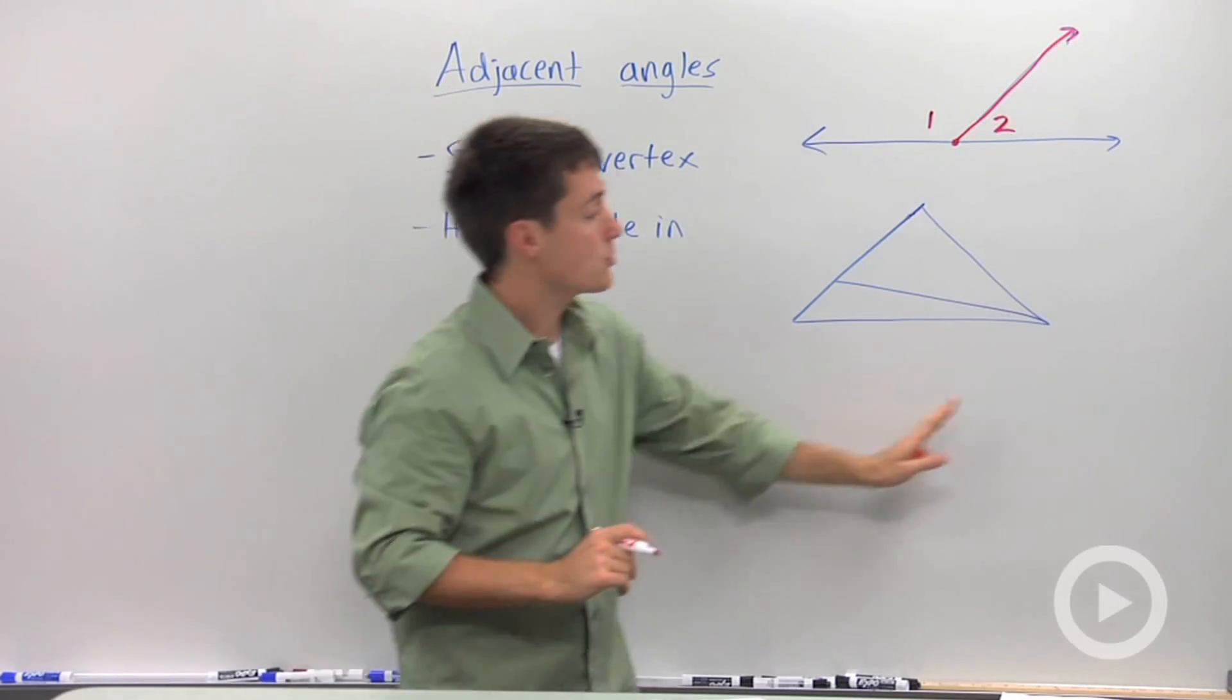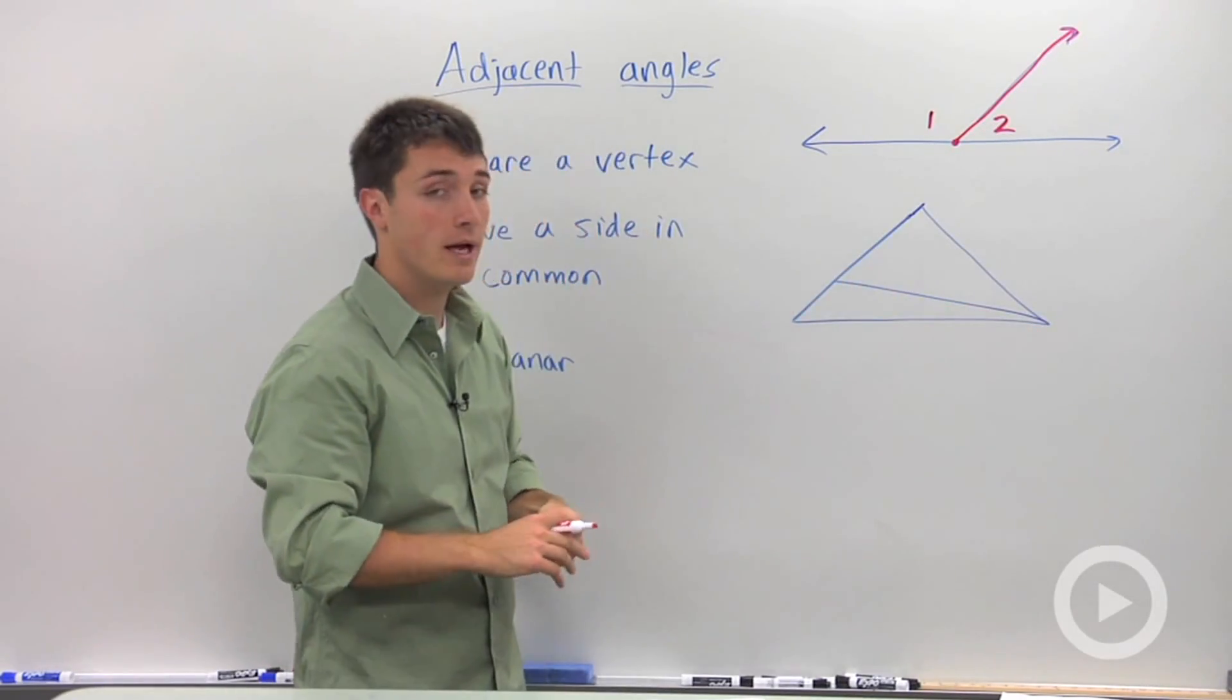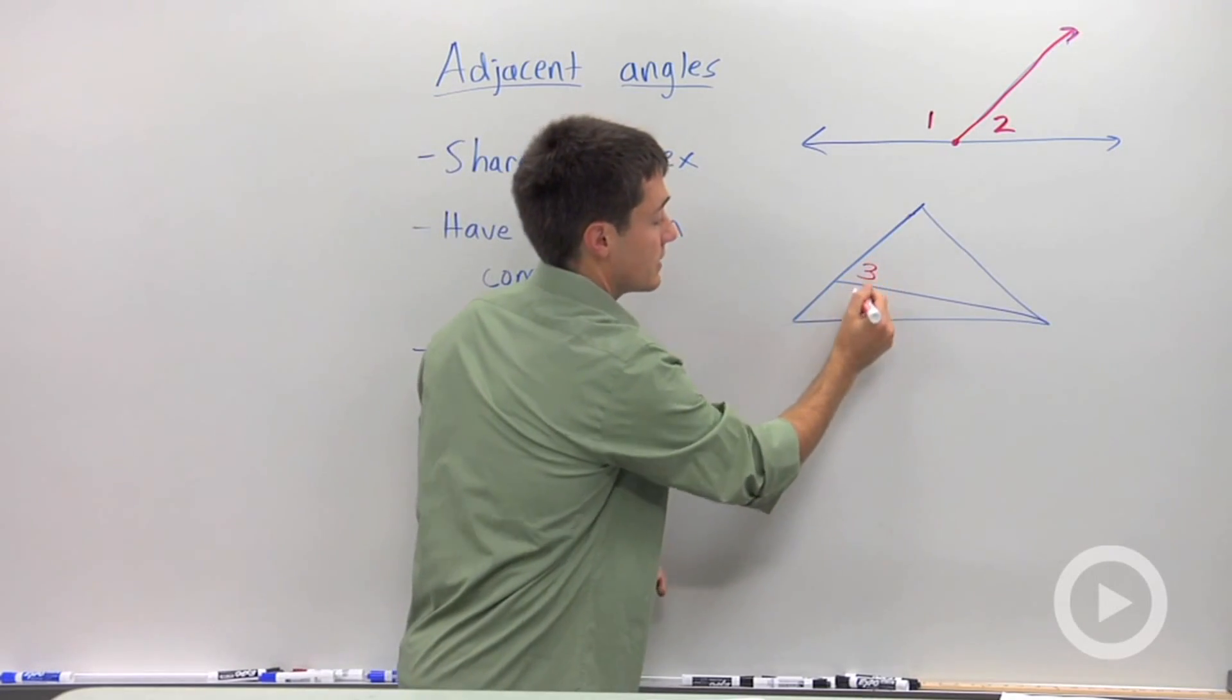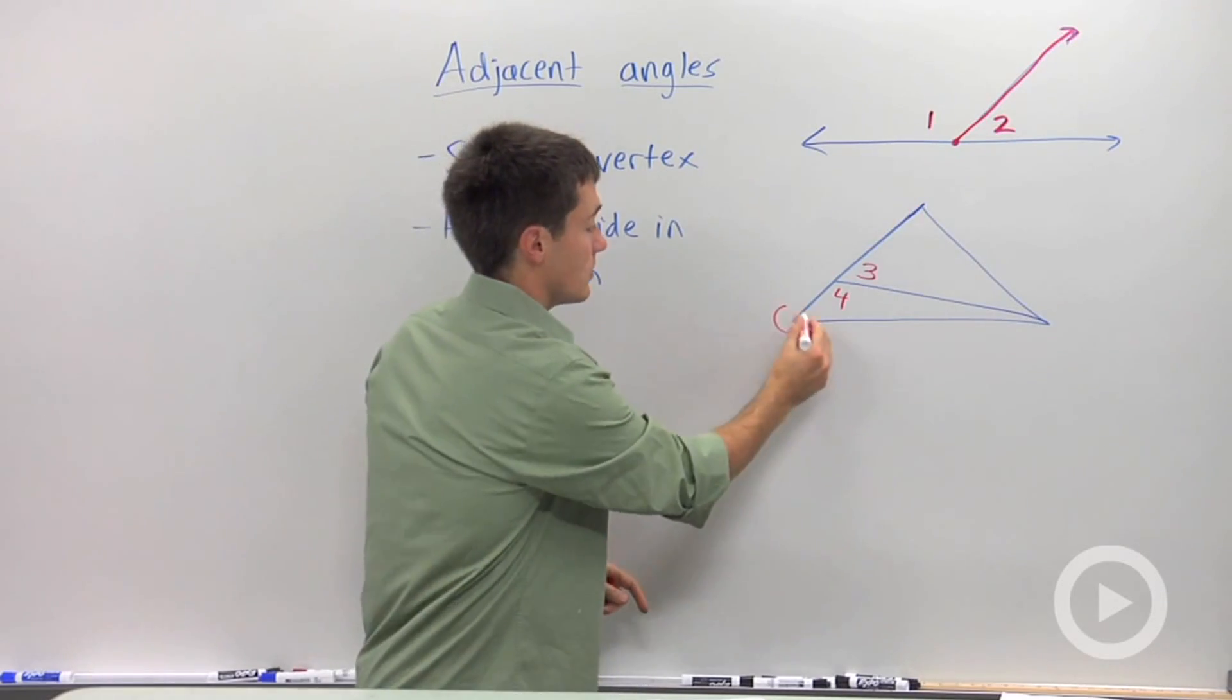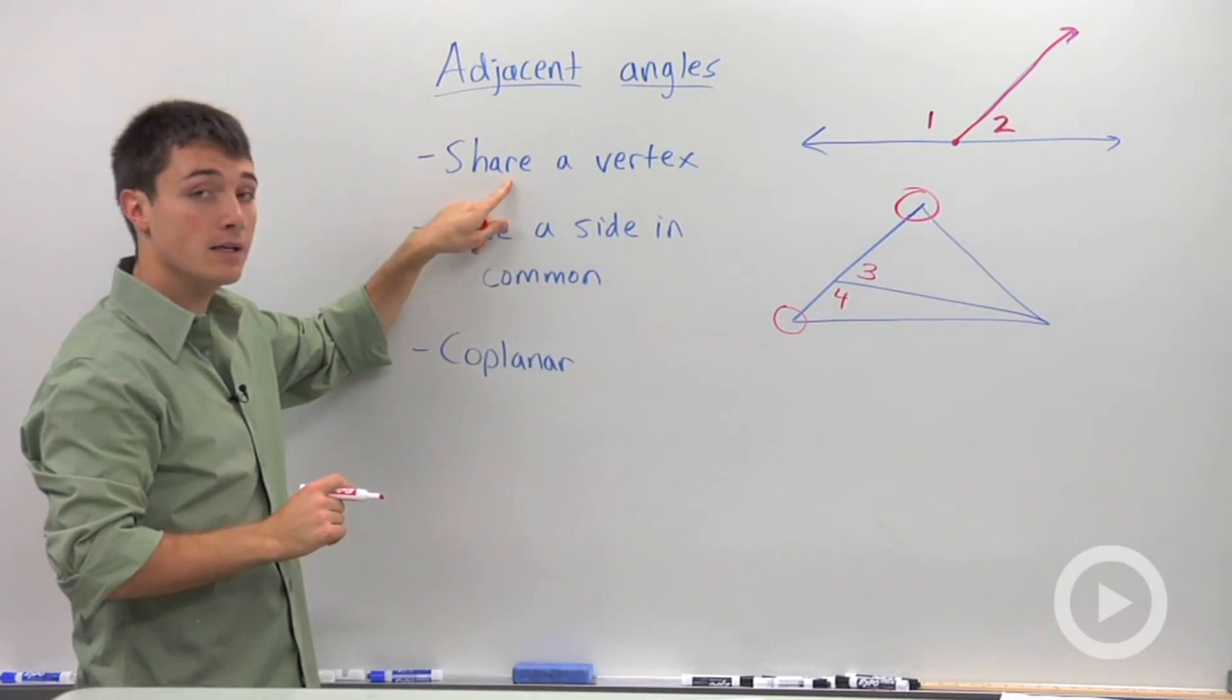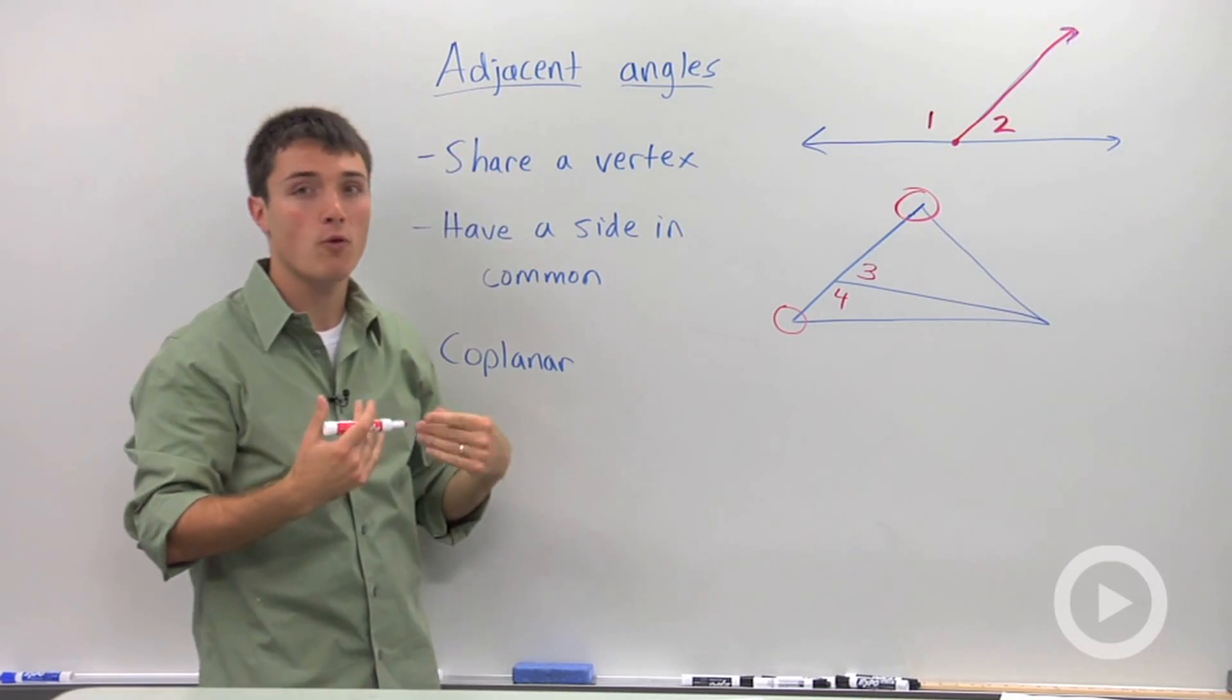So if I look at this triangle right here, where I've drawn in a line segment, we only have two adjacent angles. I'm going to write these as 3 and 4. These two angles right here, I'll circle them, are not adjacent because they do not share a vertex. So you can think of adjacent as kind of a word for next to.